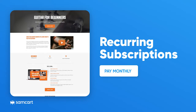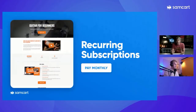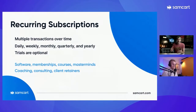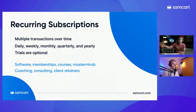Recurring subscriptions — anything that bills you more than just right here, right now. Types of recurring subscriptions: billing someone a hundred dollars a month, a thousand dollars a year, or opening a free trial and billing one more time seven days from now — that would be a recurring subscription. Any kind of free trial or paid trial is itself a subscription. Subscriptions are multiple transactions over time — any billing where you want to reuse that customer's credit card, PayPal, Apple Pay, or Google Pay information to charge them again later.